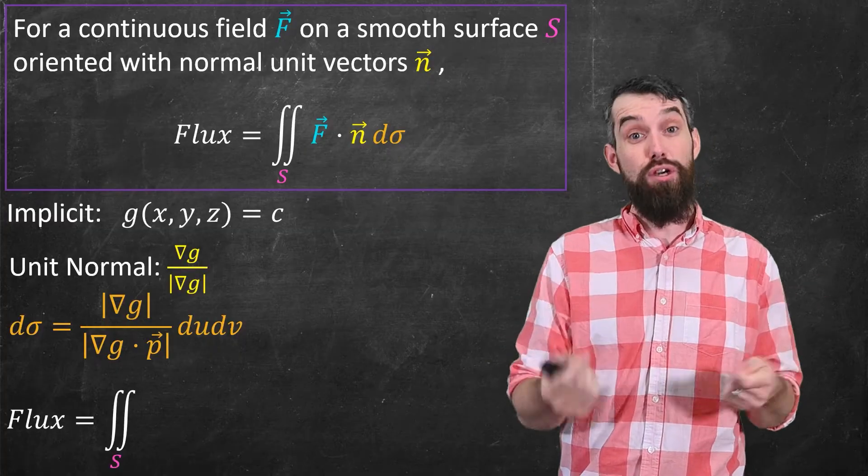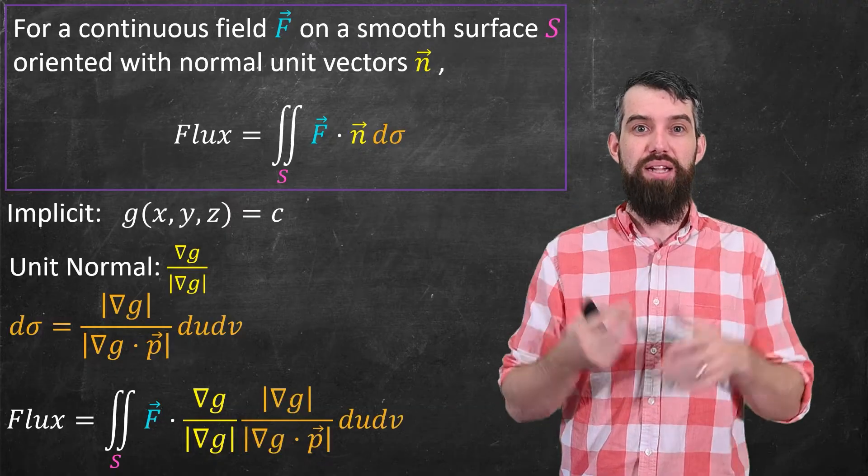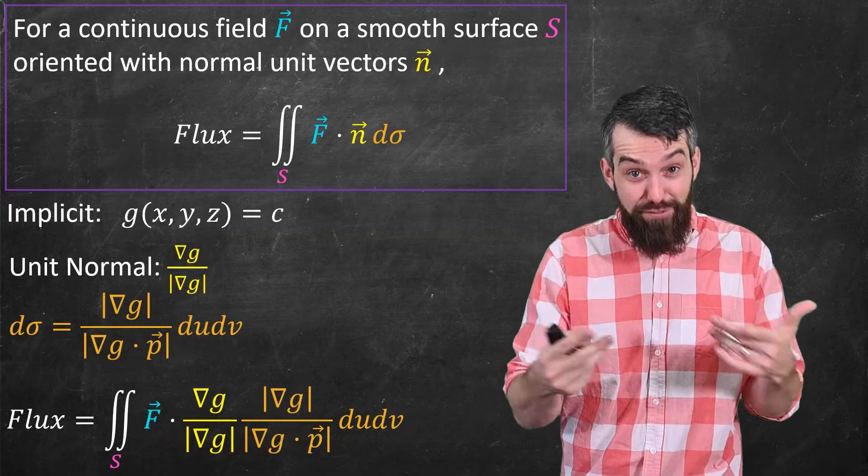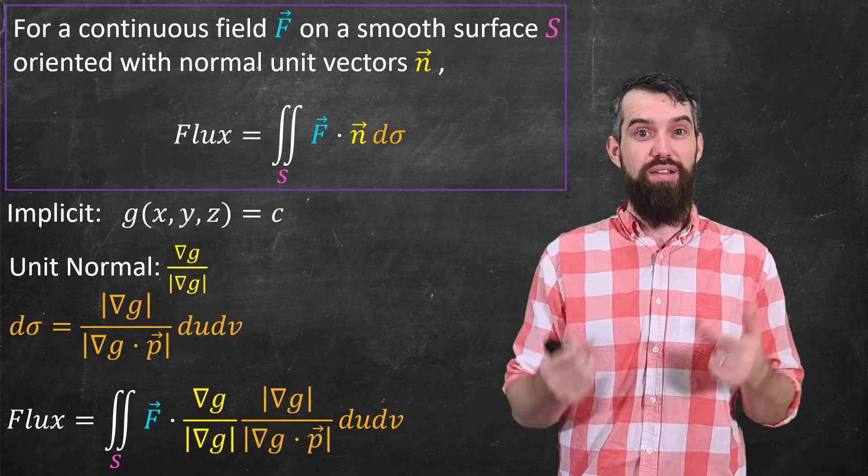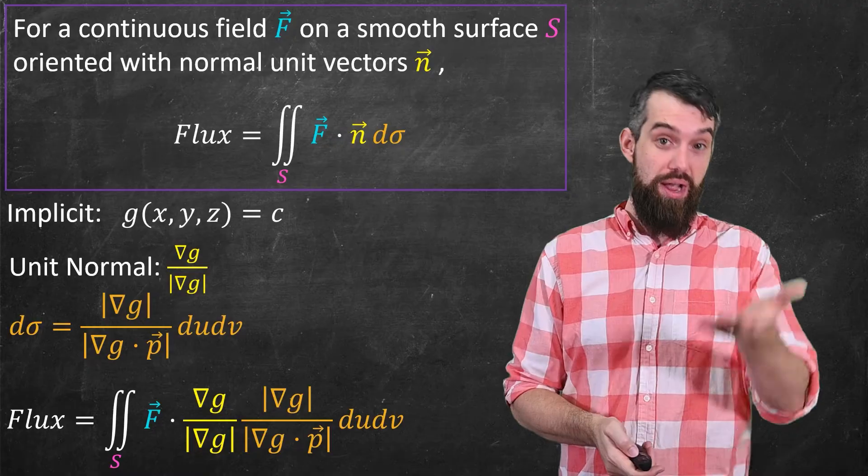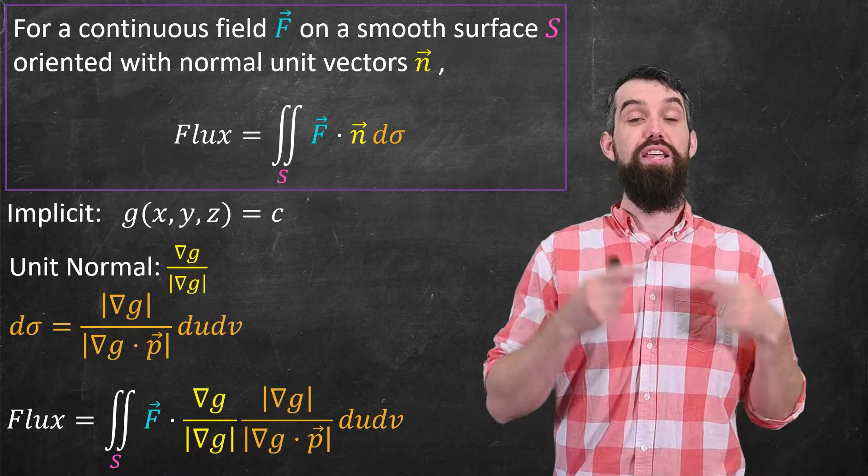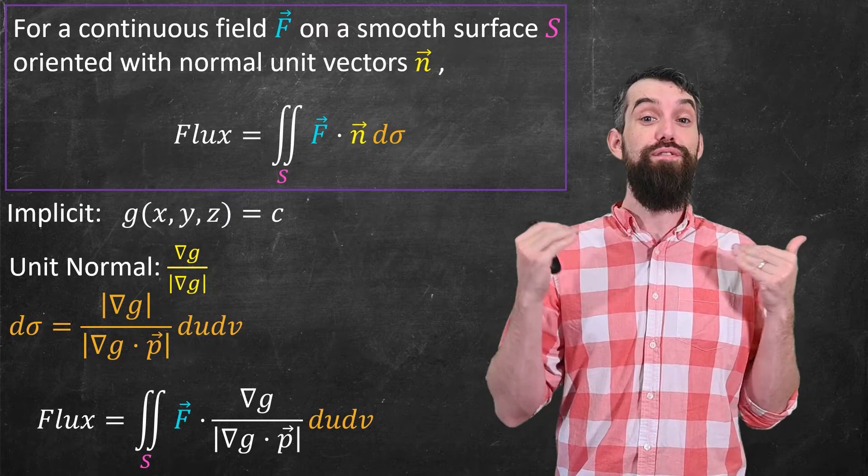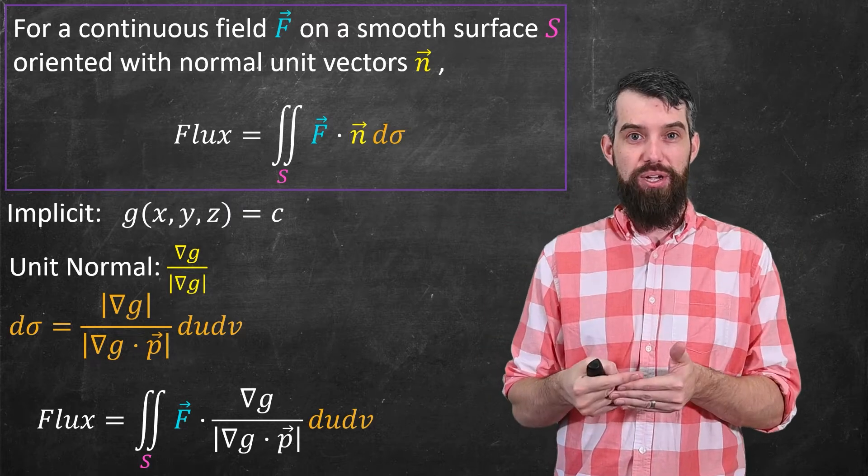This gives us the surface integral of f dot, well, I plugged in the normal vector, and I plugged in my d sigma, my expanded d sigma. Thankfully, I noticed some cancellation. The length of the gradient vector is there in both cases, so I can just cancel that off, and gives me the final value of f dot the gradient of g divided out by the gradient of g dotted with this p vector.